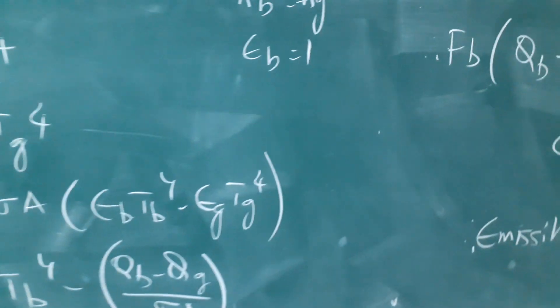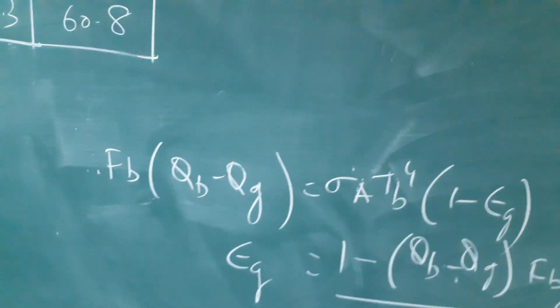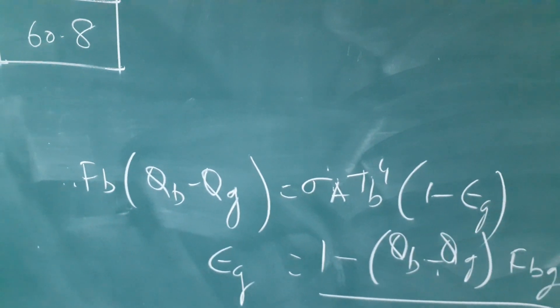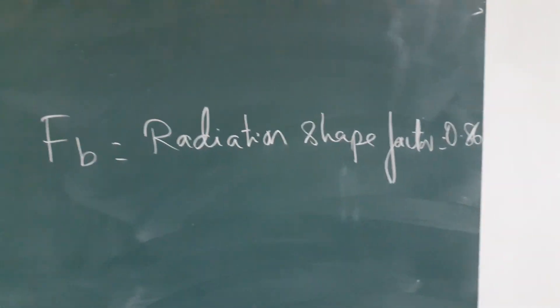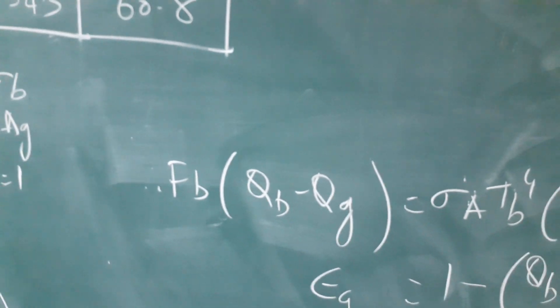Okay. Now after this, you are introducing a factor which is called FB, radiation shape factor, which is equal to 0.86. So you have to include the radiation shape factor also.